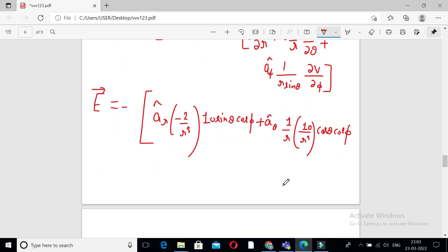Last term, plus A phi cap 1 upon R sine theta into 10 upon R square sine theta. So we get the differentiation of cosine phi is minus sine phi.